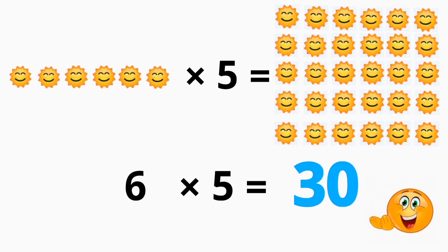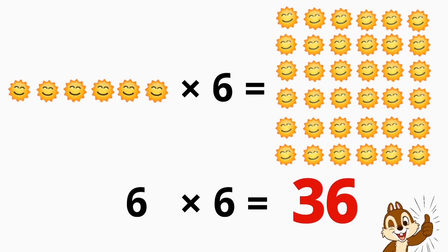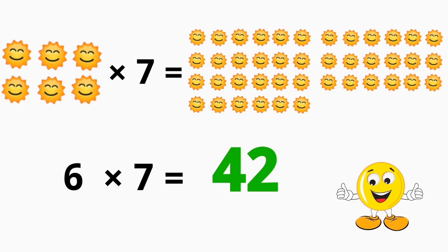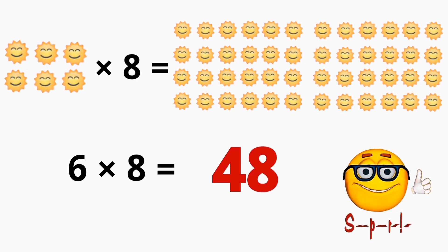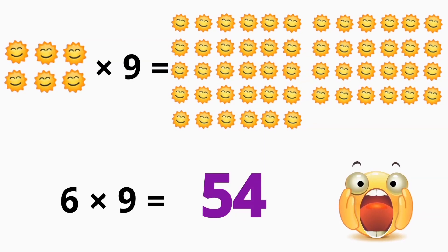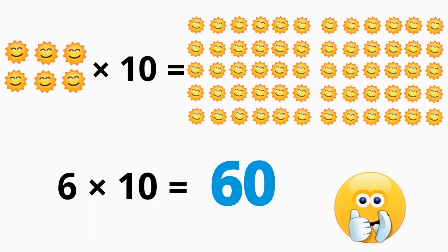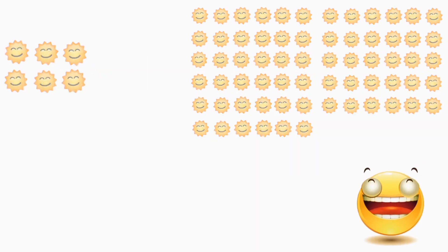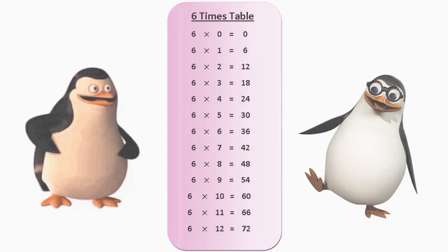6 x 5 is 30, 6 x 6 is 36, 6 x 7 is 42, 6 x 8 is 48, 6 x 9 is 54, 6 x 10 is 60, 6 x 11 is 66, 6 x 12 is 72. This is the table 6 song.